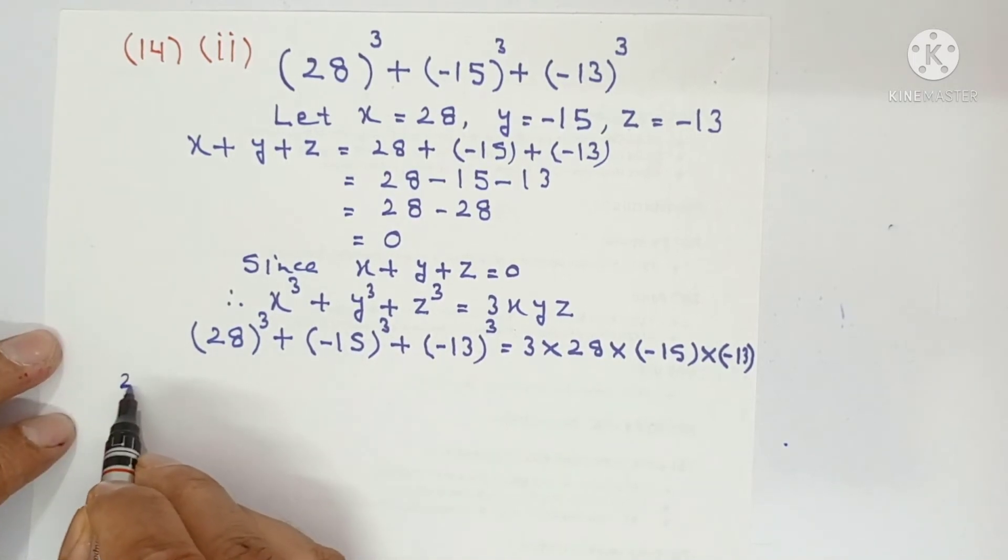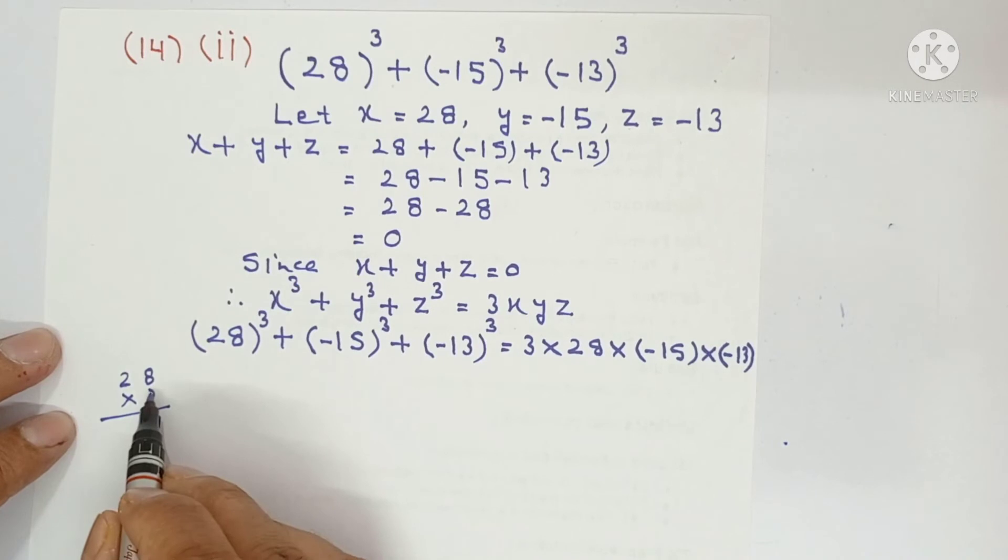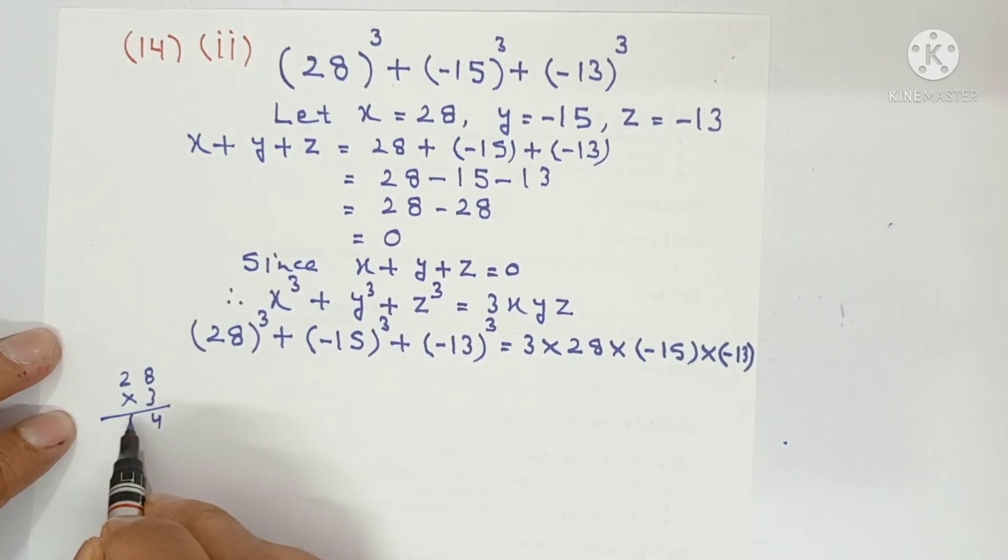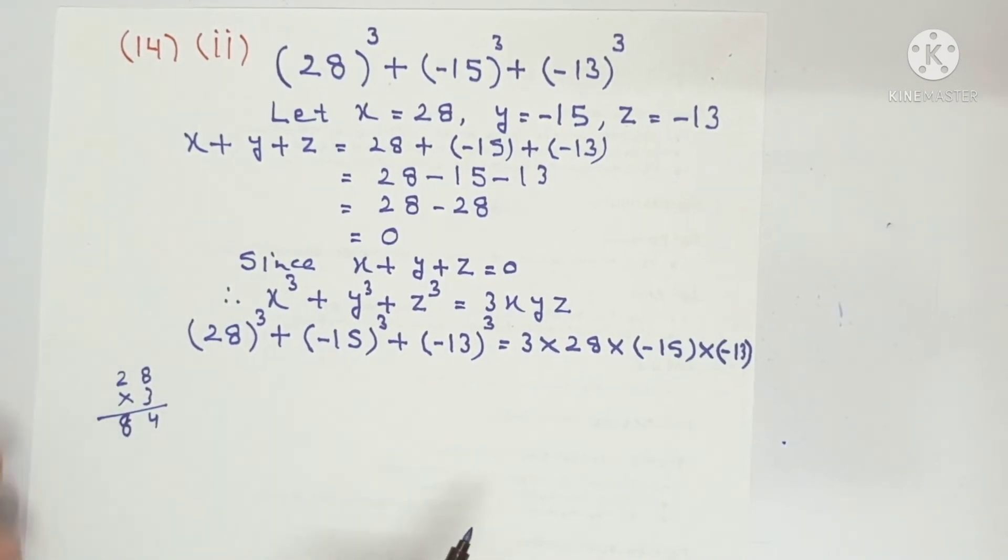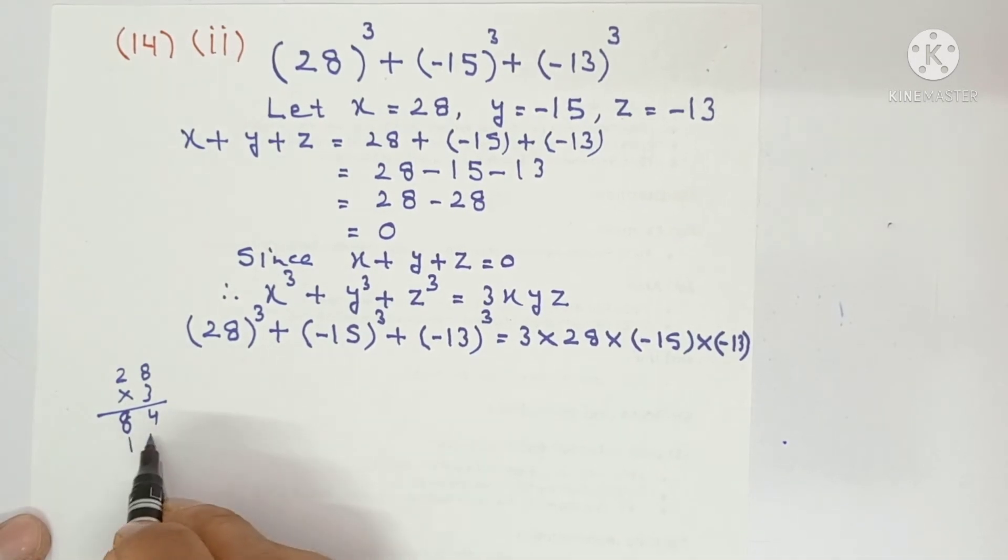First multiply 28 by 3. 8, 3 times 8 is 24, 3 times 2 is 6 and 2 is 8. 84 is the result.